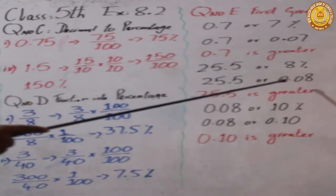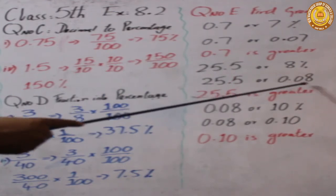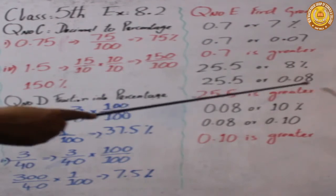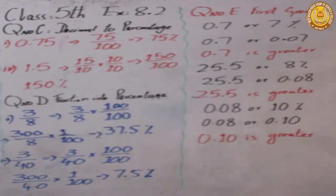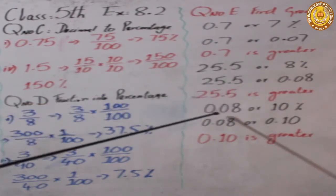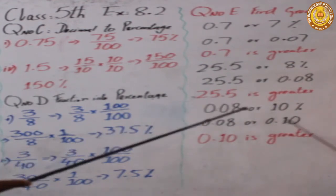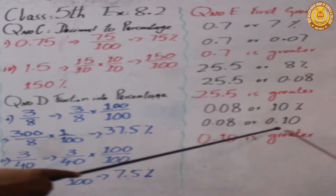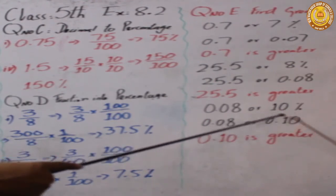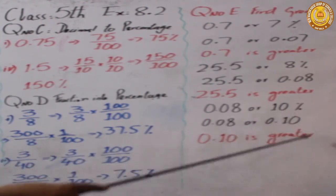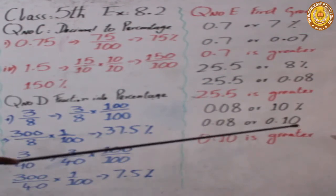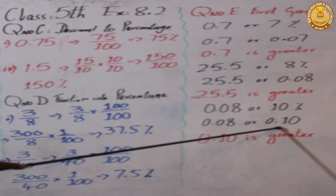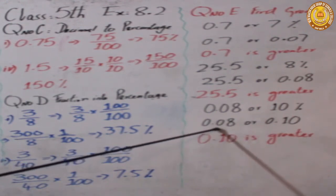Next comparison: 0.08 and 10%. Converting 10% — 10 divided by 100 = 0.10. Comparing 0.10 and 0.08: looking at the first digit after the decimal point, 1 is greater than 0, so 0.10 is greater than 0.08. Therefore 10% is the greater value.